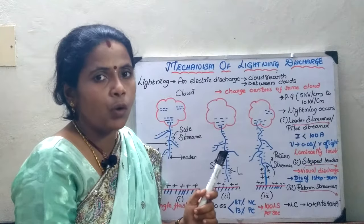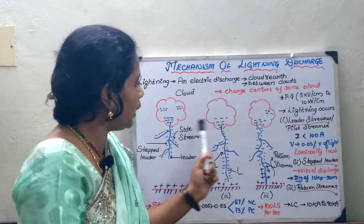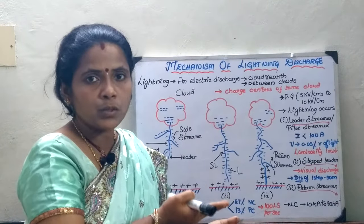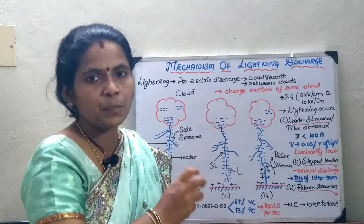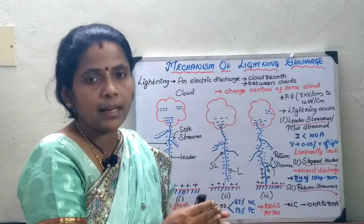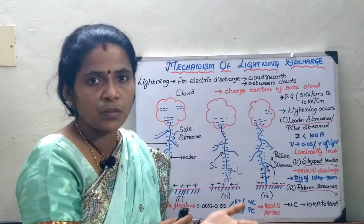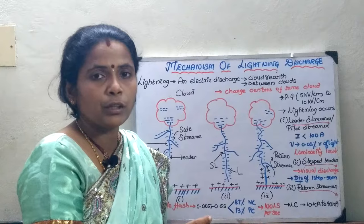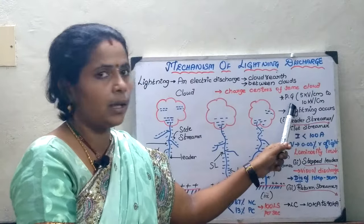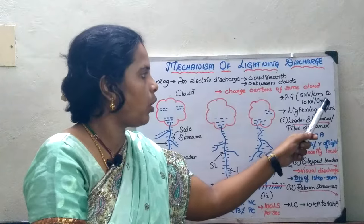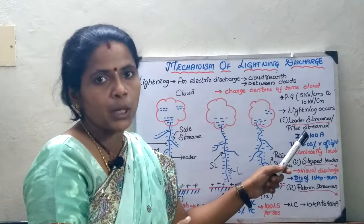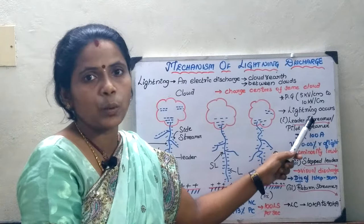We will analyze the mechanism of lightning discharge in three different aspects. Clouds form when warm air rises, mixes with dust particles, and forms droplets. Larger droplets form positively charged clouds and smaller droplets form negatively charged clouds. When the potential gradient reaches 5 kV/cm or 10 kV/cm and exceeds the breakdown strength of atmospheric air, lightning occurs.